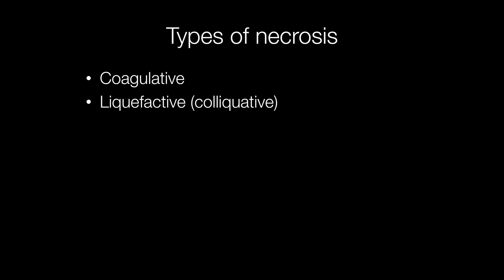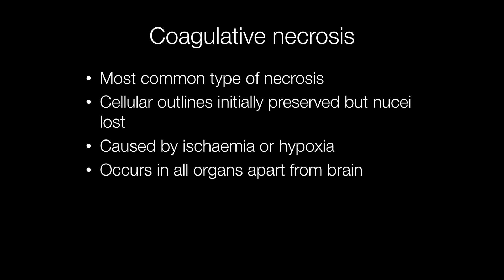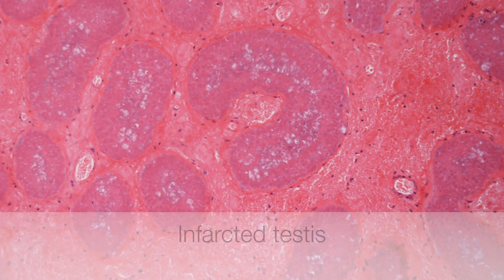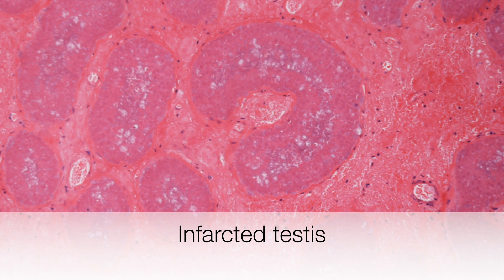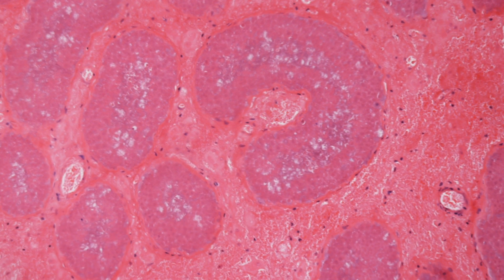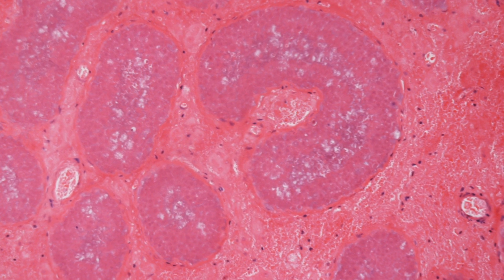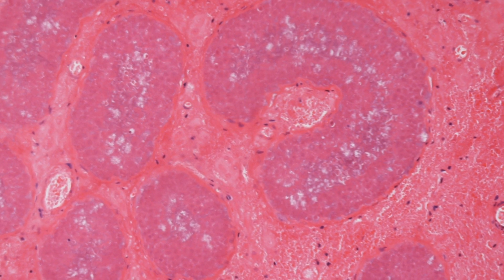There are two main types of necrosis: the most common being coagulative necrosis, and the other type is liquefactive or colliquative necrosis. Coagulative necrosis can occur anywhere in the body apart from the brain. It is caused by ischemia or hypoxia, and histologically the cellular outlines are initially preserved with loss of nuclei. This is a section of testis that has undergone hemorrhagic infarction as a result of torsion, and you can see the ghost outlines of the seminiferous tubules devoid of their nuclei.